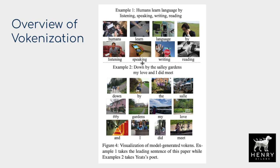Some interesting examples: the token 'speaking' corresponds to a cell phone in hand, and 'gardens' shows a grass patch that looks like a garden. The model does cross-attention over the entire sentence as well as other image tokens to predict the masked image token. For example, the word 'by' maps to different images depending on context: in 'humans learn language by listening, speaking, writing, reading,' it maps to someone talking on a cell phone, whereas in 'down by the Sally gardens my love and I did meet,' it maps to a bench in a park.